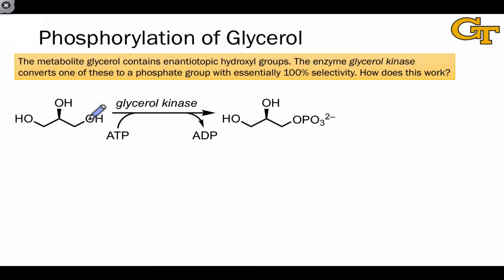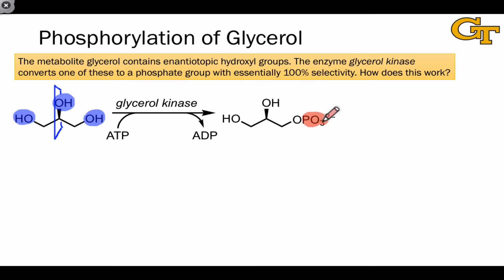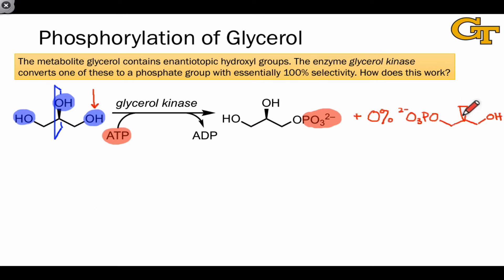Glycerol is the structural background of triglycerides. The two hydroxyl groups on the outside have an enantiotopic relationship, since the molecule includes a plane of symmetry right through its center. The enzyme glycerol kinase is responsible for changing one of the hydrogens on one of these two hydroxyl groups into a phosphate group, and the phosphate donor is ATP, adenosine triphosphate. Based on the reaction scheme shown here, the enzyme operates selectively on the right-hand enantiotopic hydroxyl and generates essentially nil percent of the opposite enantiomer.